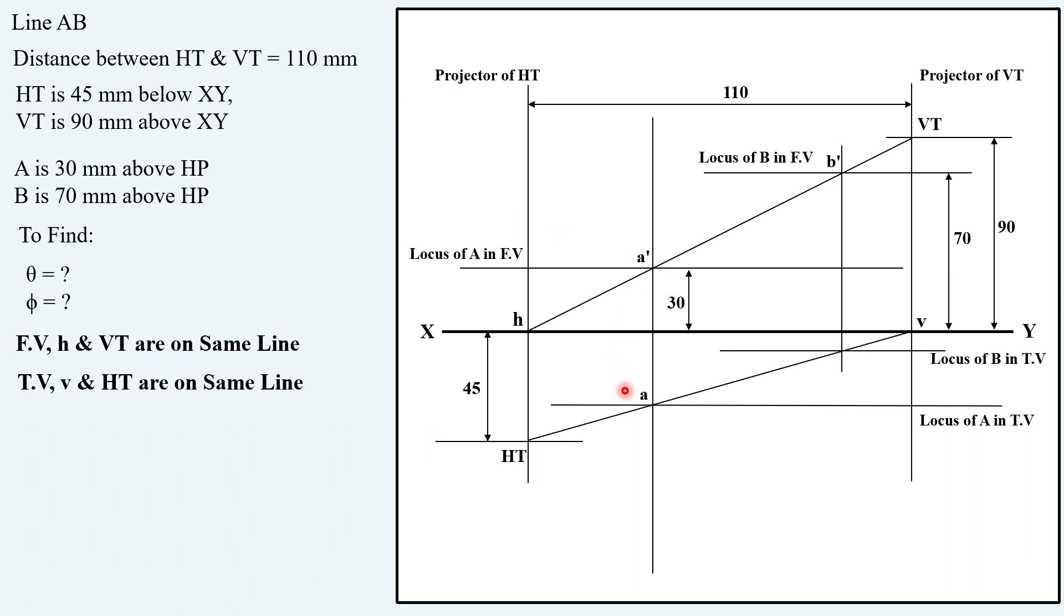If I draw vertical projector corresponding top view points will be found with their locuses. So this is the top view point of A and this is the top view point of B with locus B in top view, locus A in top view. This brings us to the solution that this is our front view and this is our top view.